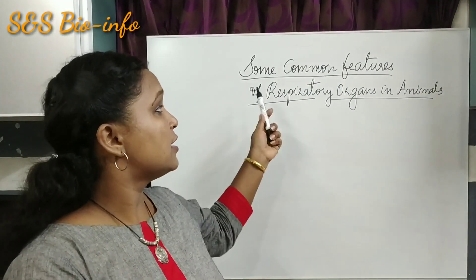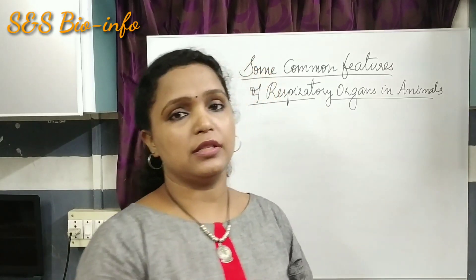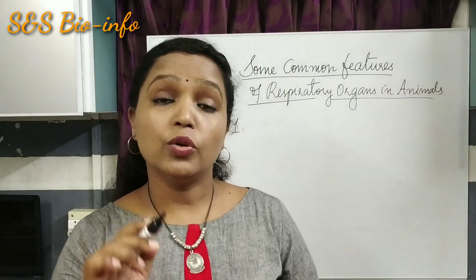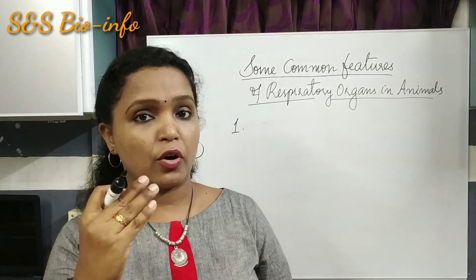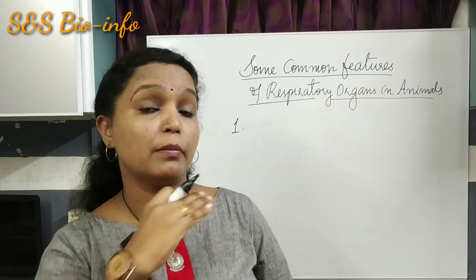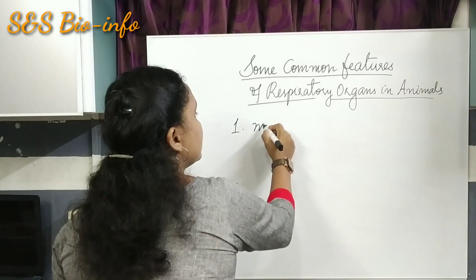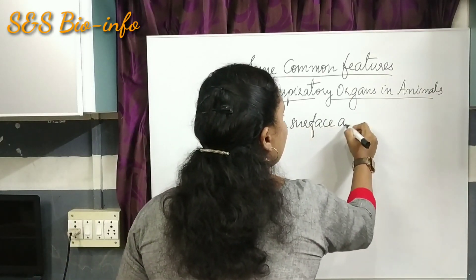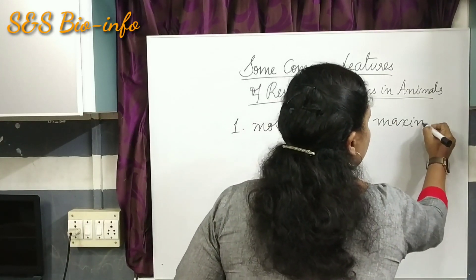Now let's learn about some common features of respiratory organs in animals. Number one: those animals possess specific structures to increase the surface area for the maximum exchange of gases — more surface area for maximum exchange of gases.